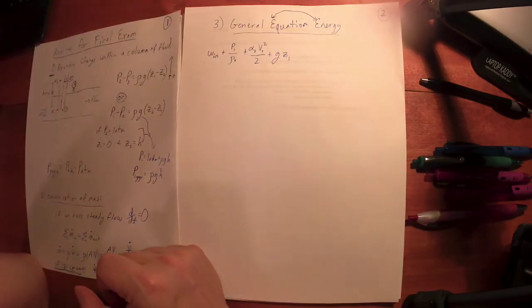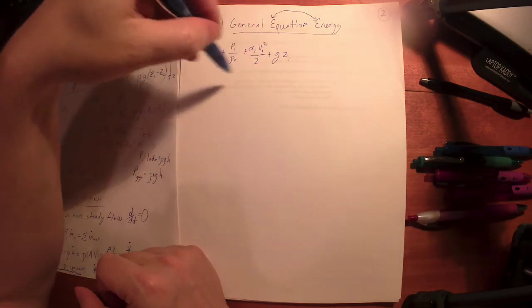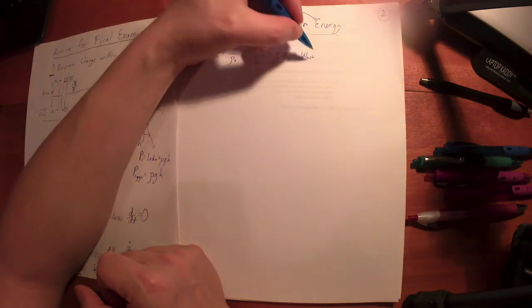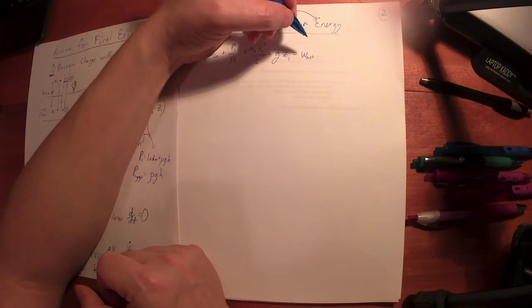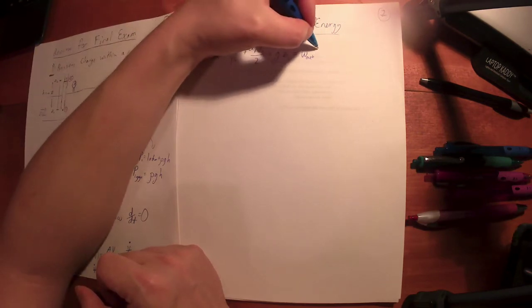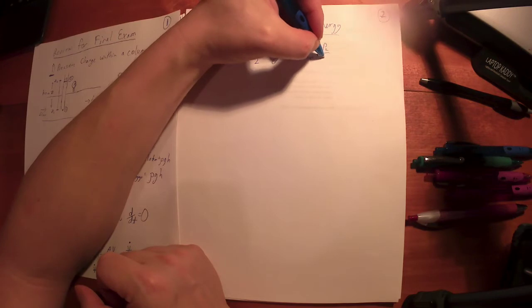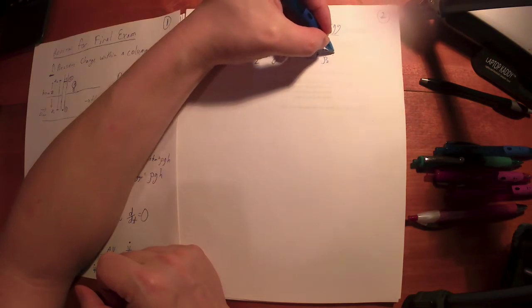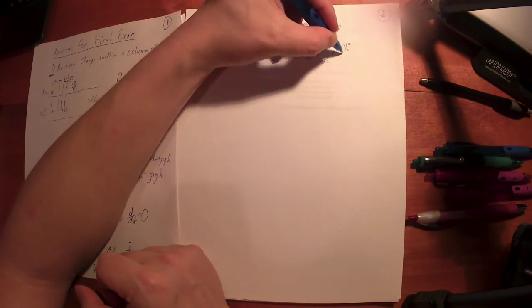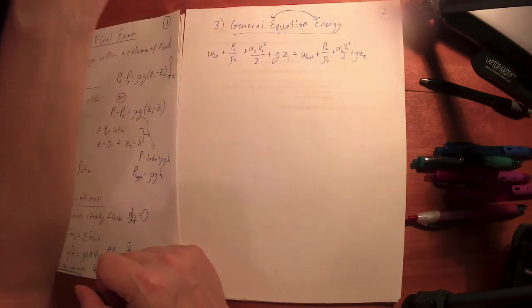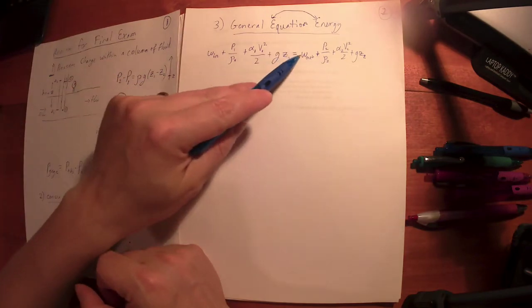So that's the kinetic energy, alpha 1 v1 squared over 2, plus the potential energy gz1. So this is all the mechanical energy into a fluid stream is going to equal all of the mechanical energy coming out of the fluid stream. So that's any work coming out, maybe a turbine or paddle wheel, something pulling extracting mechanical energy from the flow, plus p2 over rho 2, plus alpha 2 v2 squared over 2, plus gz2.